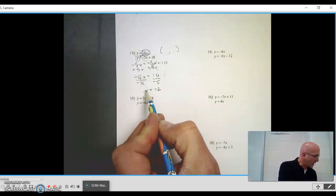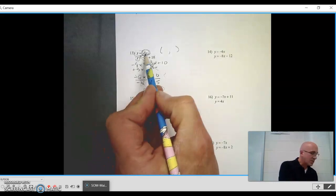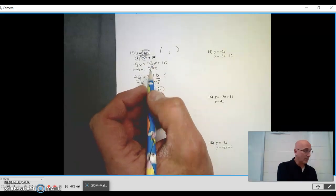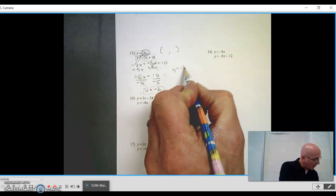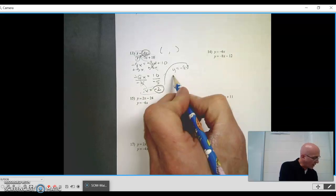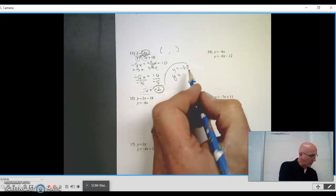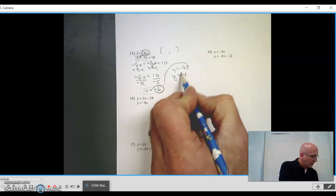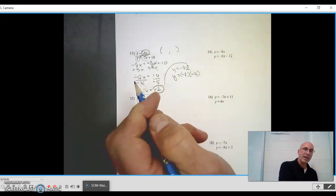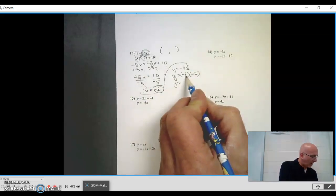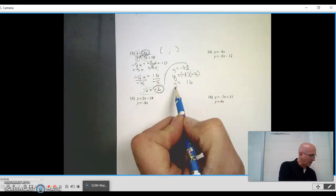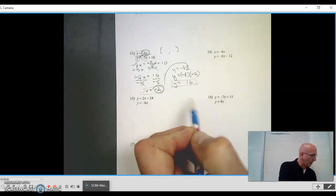What I can do now is take x equal negative 2, substitute it back into one of these equations. It doesn't matter which one. I like to choose the simpler one, so I'm going to choose y equals negative 8x. I'm going to put negative 2 in for your x. Let's write it out so we don't get confused. y equals negative 8 times negative 2. I just substituted the negative 2 in. Now 8 times 2 is 16. Negative times negative is a positive. So my y is 16 when my x is negative 2. I'm going to write that as an ordered pair.